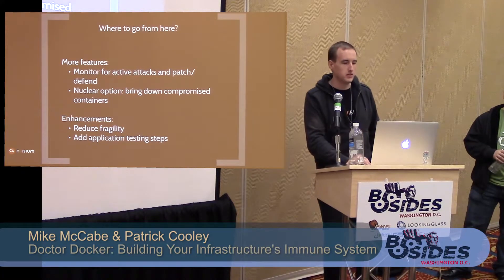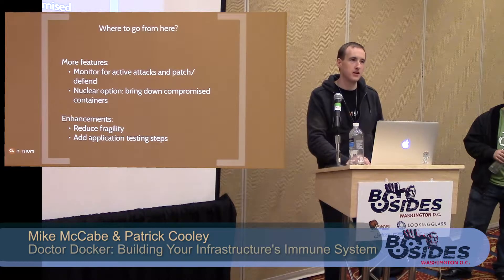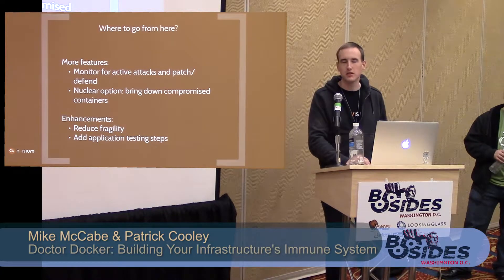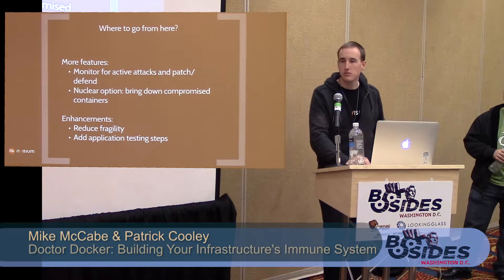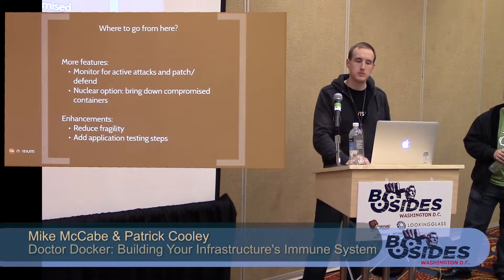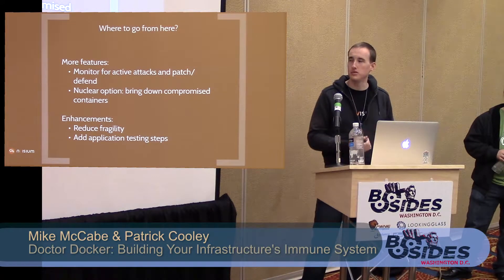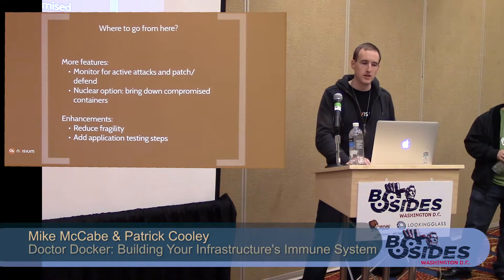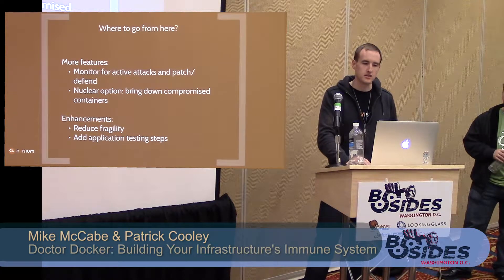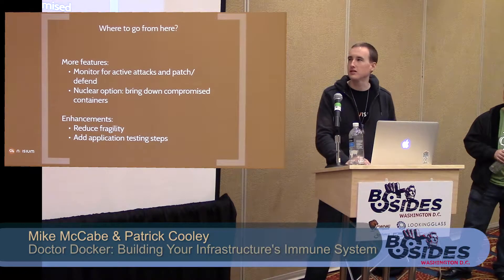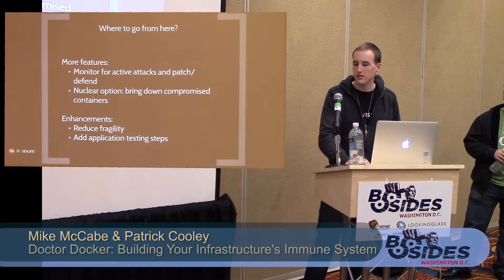Enhancements we want to make include making the system more robust and stopping it from breaking as much — it's pretty new code and not insanely well tested. The other key thing we need to build is a testing framework for the applications, because we're bringing up a new version without really testing it much. We need to bring up an extra container, run the new code, test it, and then swap it in. But we've proved that with Docker you can very easily build a system that can defend itself against insecure code.